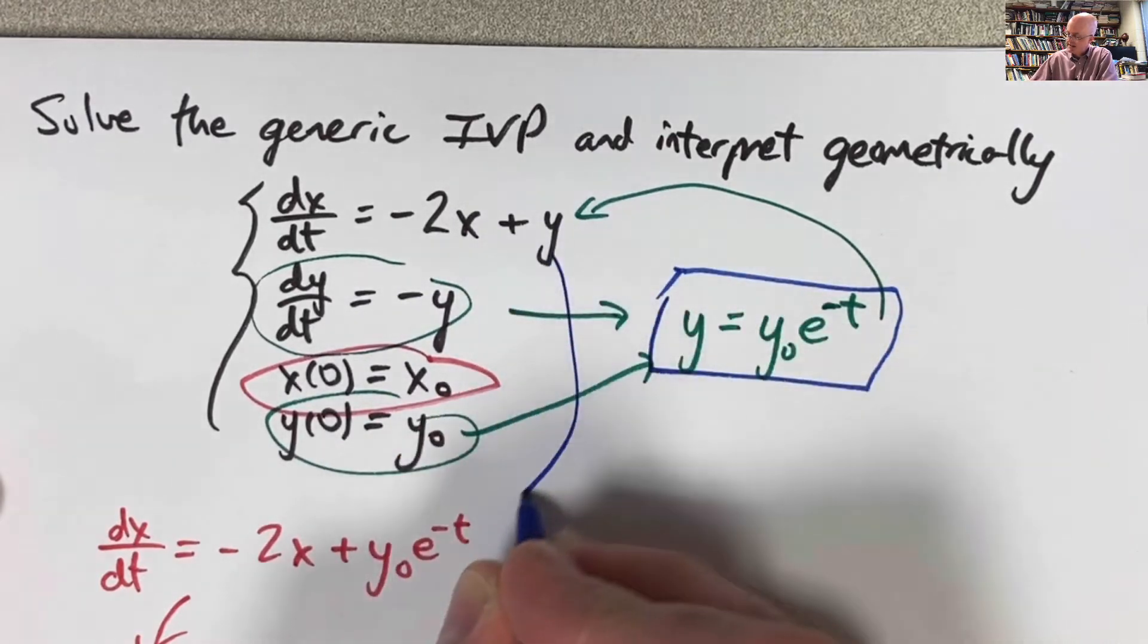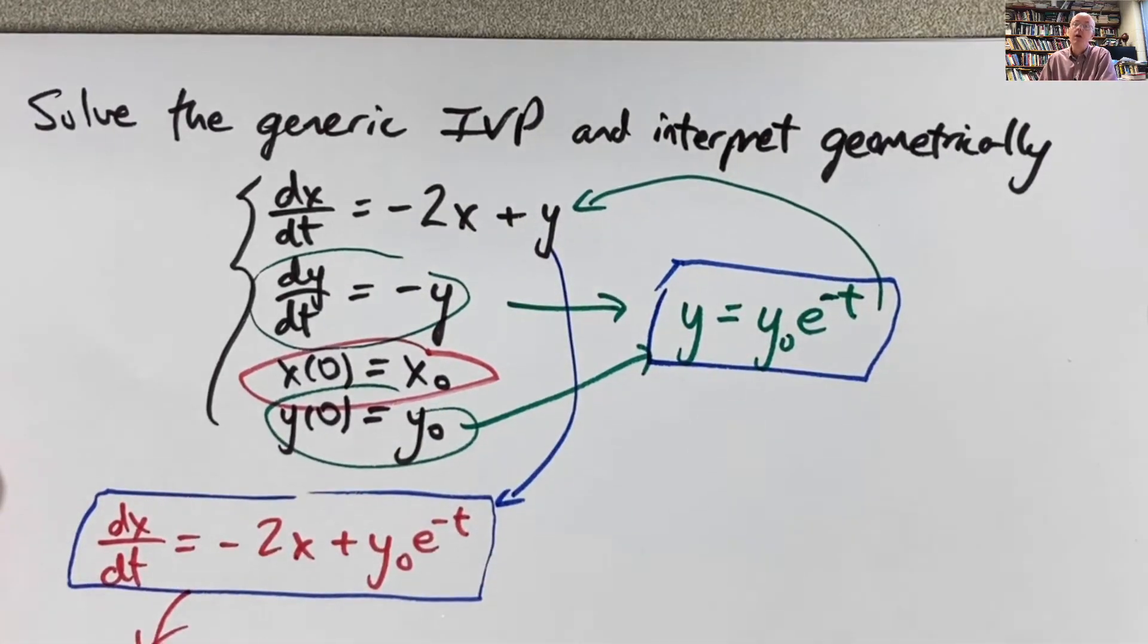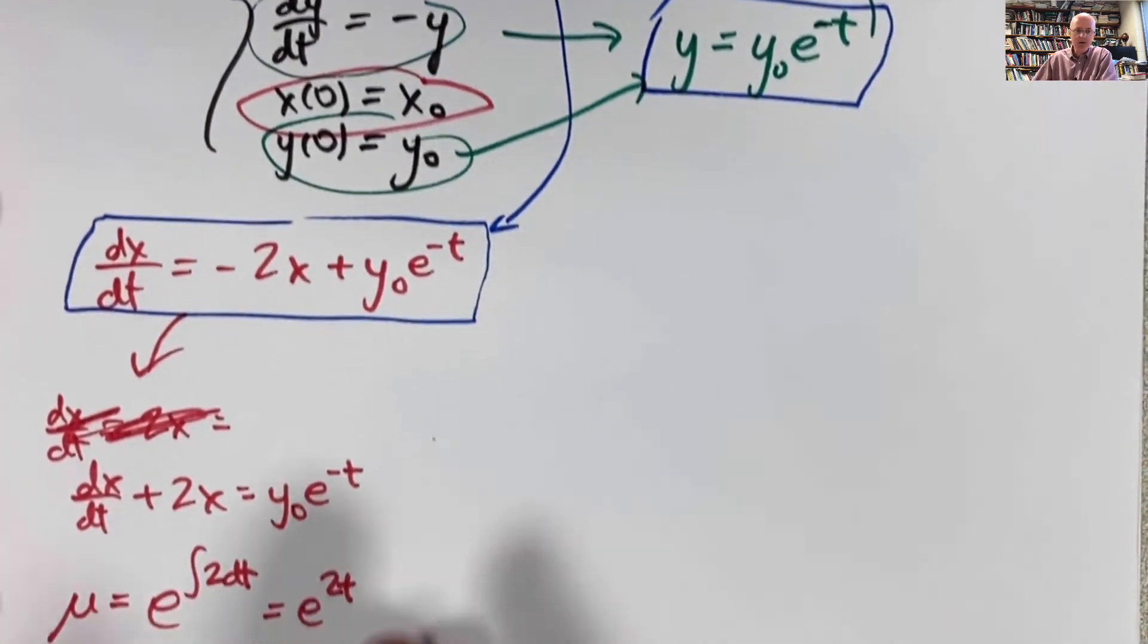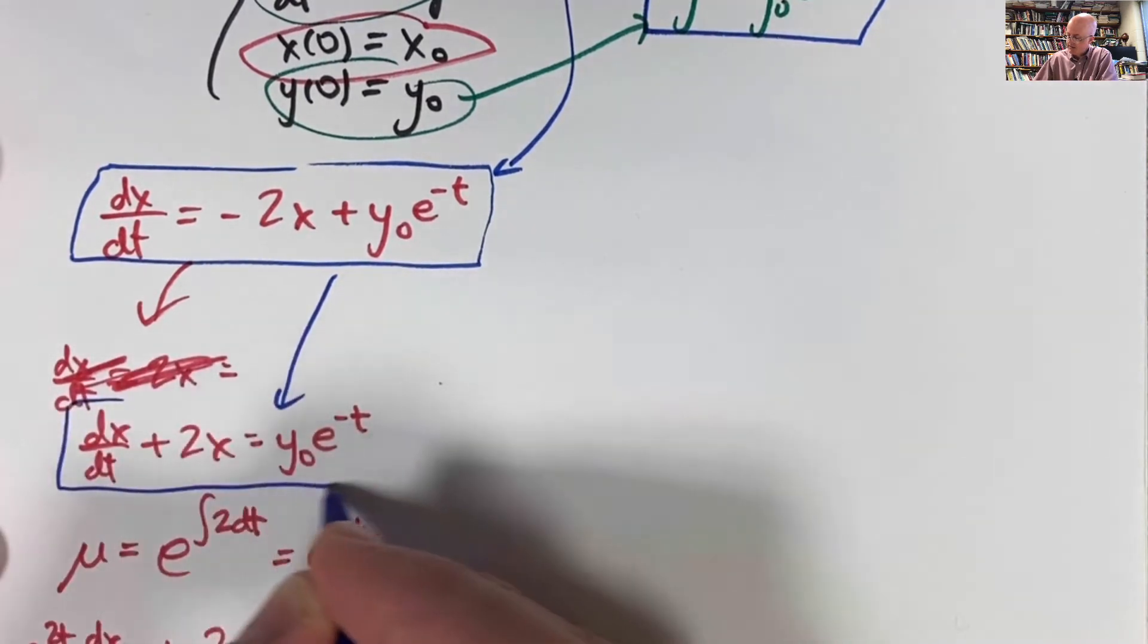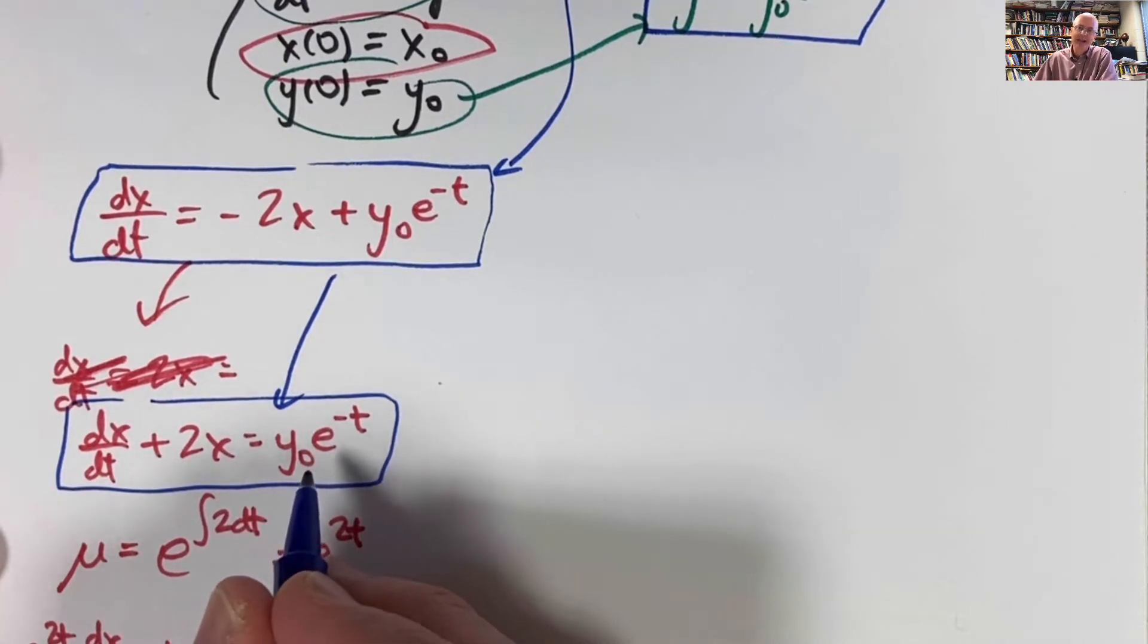Then we substitute that into the first differential equation in place of y. And what we get is this equation right here. This is the differential equation we now want to solve with the method of undetermined coefficients. How do you do that? Well, if you write it in this form, like I did in the previous video, that's a non-homogeneous linear equation.